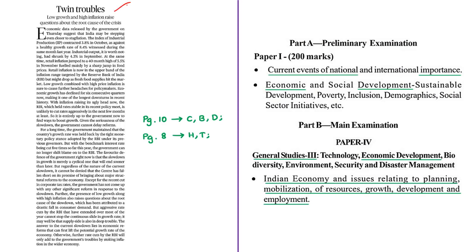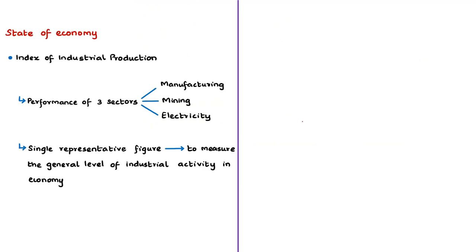This editorial is about the state of the Indian economy. The author discusses the state of the Indian economy using recent data based on the Index of Industrial Production and inflation. The IIP has historically been one of the most well-known indicators for comparing economic performance, mainly for short-term performance. IIP is a composite indicator that measures short-term changes in the volume of production — based on changes in volume, not prices — and is based on a basket of industrial products. IIP performance is calculated broadly based on three sectors: manufacturing, mining, and electricity.